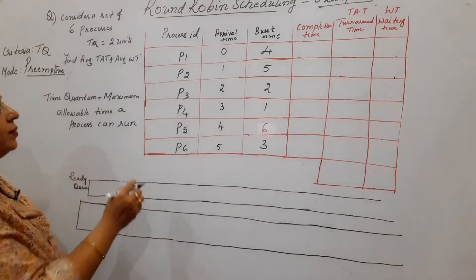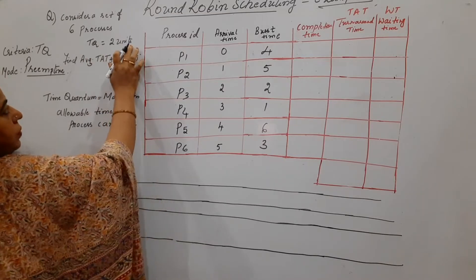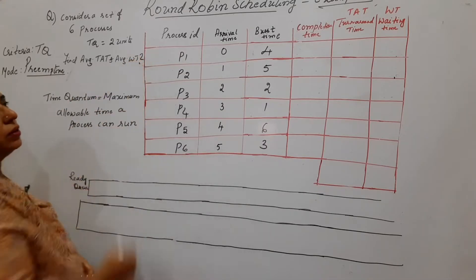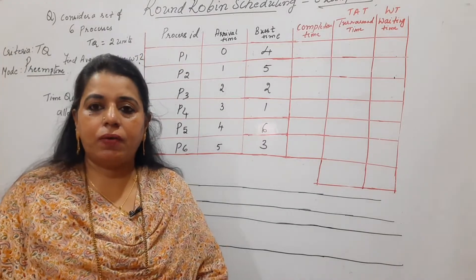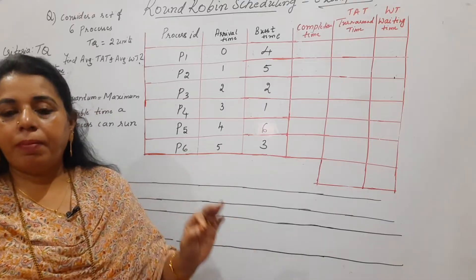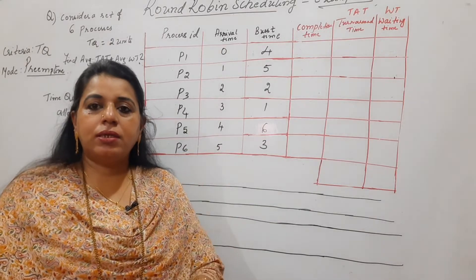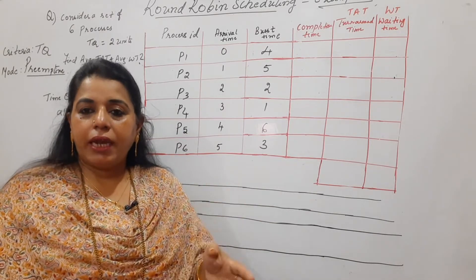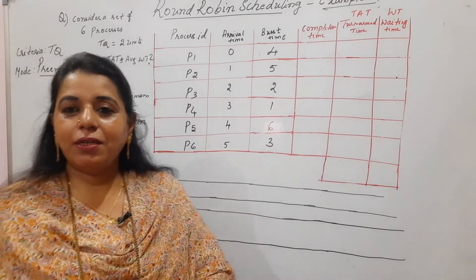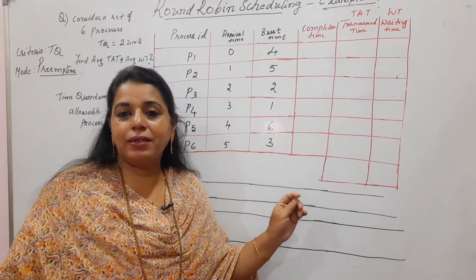In this example there are six processes. The time quantum is two units. You are required to find the average turnaround time and average waiting time. The time quantum means the maximum allowable time a process can run. Every process is scheduled for two units, then stopped to check if any other process has arrived. Students watching for the first time should watch example one on Round Robin first.